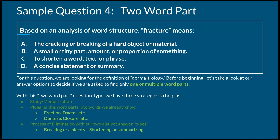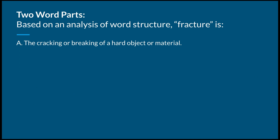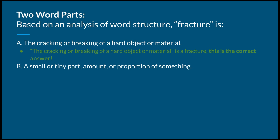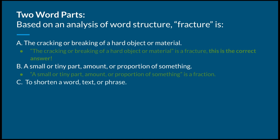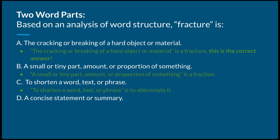With all that in mind, let's take a look at our answer options. Option A — the cracking or breaking of a hard object or material — is a fracture. That is our correct answer. Option B — a smaller tiny part, amount, or proportion of something — is a fraction. Option C — to shorten a word, text, or phrase — is to abbreviate. Option D — a concise statement or summary — is a brief, a term often used in government or legal matters.